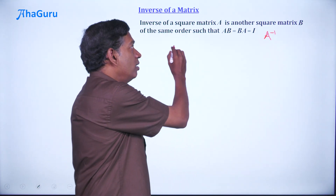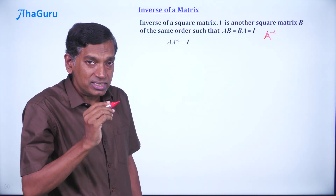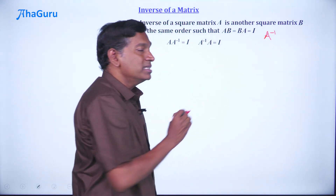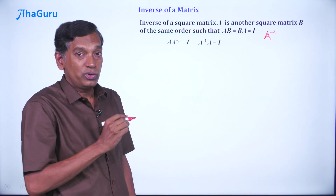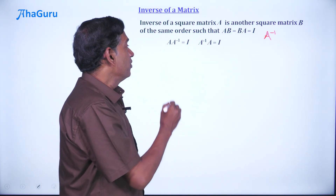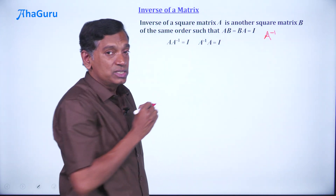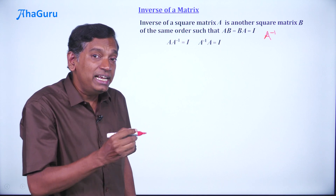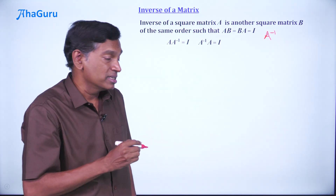That means A times A inverse is I and A inverse times A is I. Now, if we define inverse this way, what are some of the ideas related to the inverse?